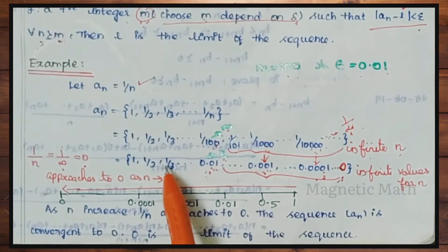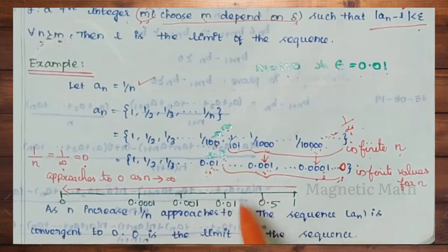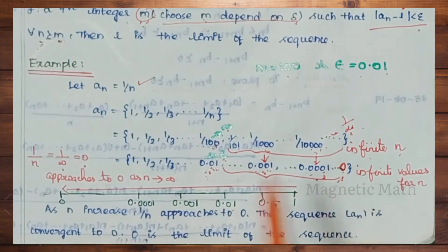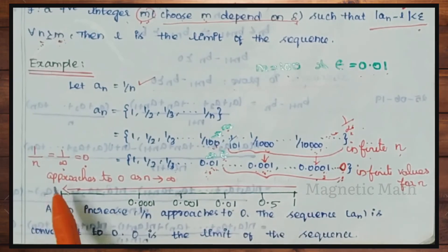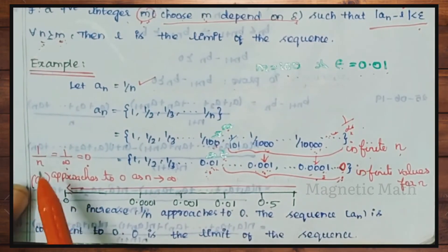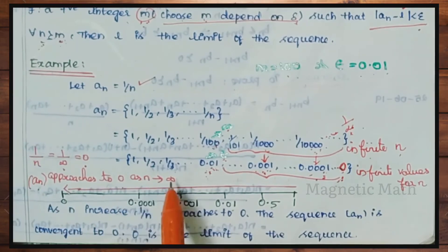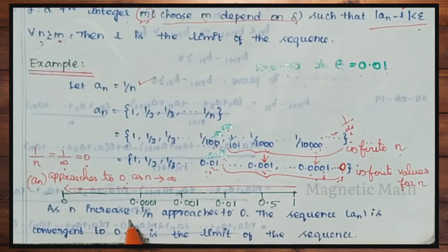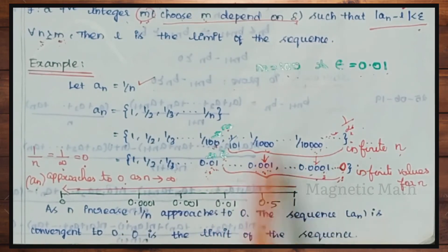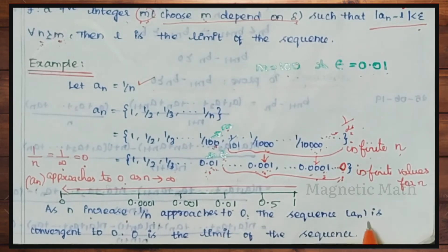Looking at the values: 1 by 2 is 0.5, 1 by 3 is 0.33, and the epsilon value is 0.01. The last value approaches 0. The sequence an equals 1 by n approaches 0 as n increases — for n equal to 1000, 10000, and so on, 1 by n approaches 0. As n increases to infinity, 1 by n approaches 0, and the sequence an converges to 0.